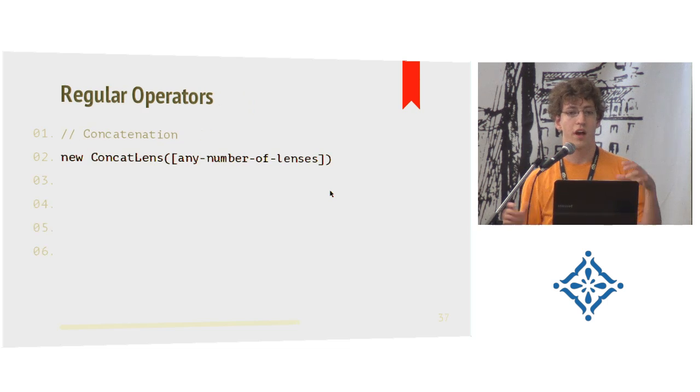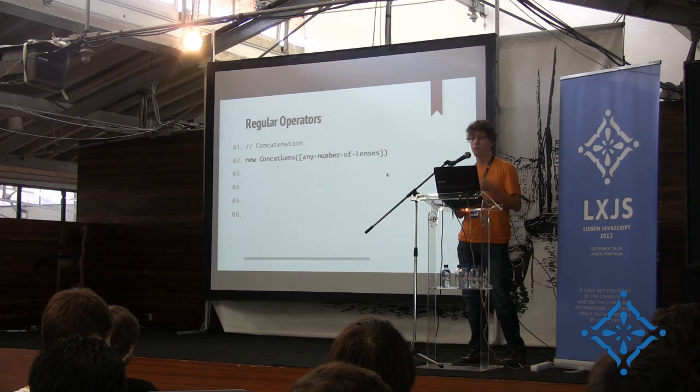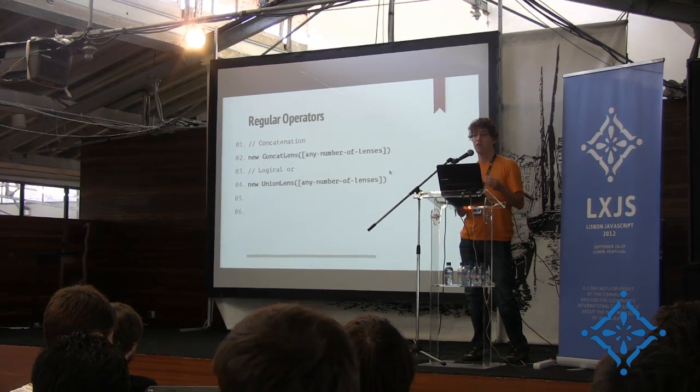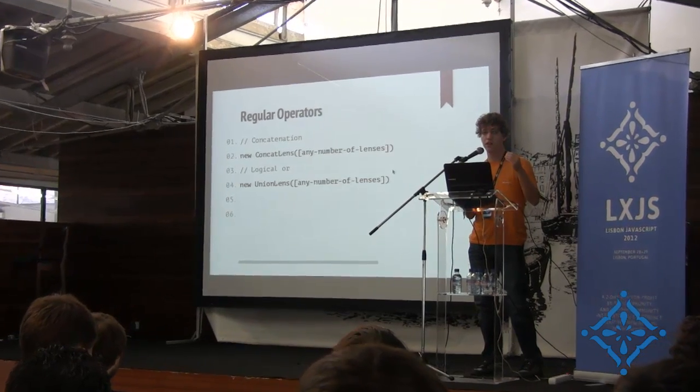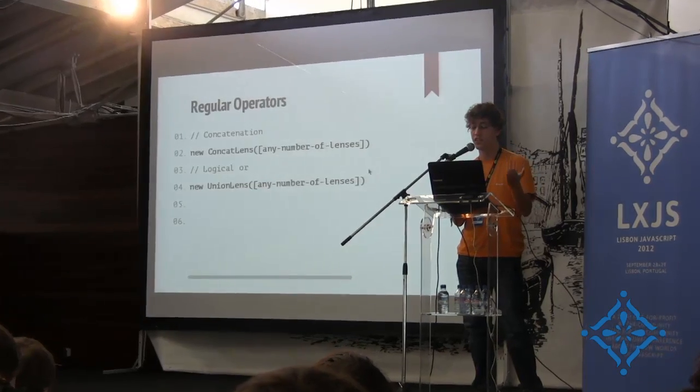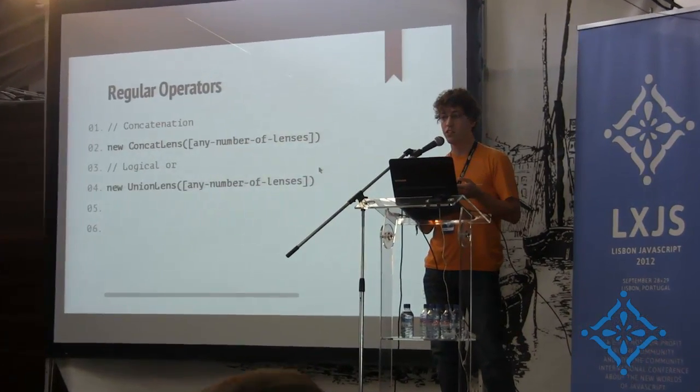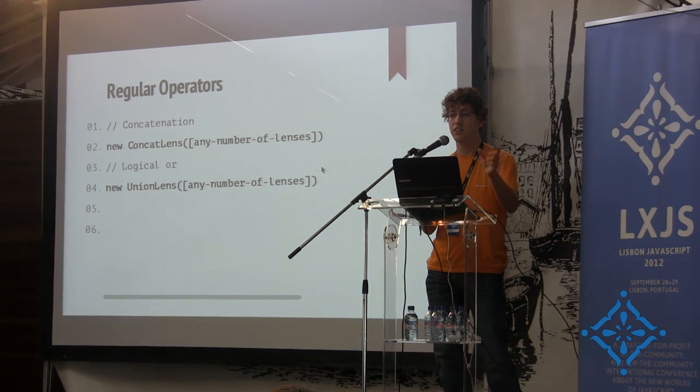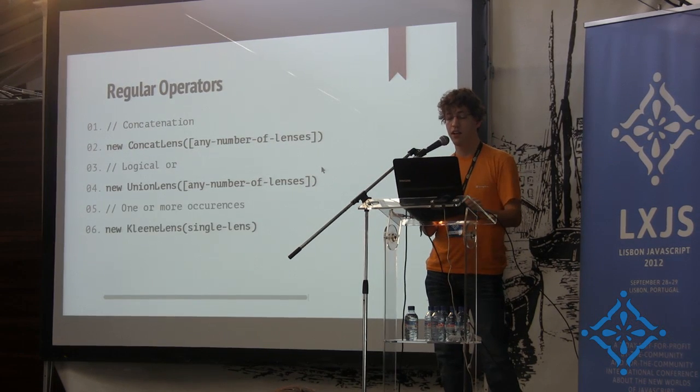And finally, you need somehow to combine all this. You need to combine those del and ins lenses, for example. You can concat them - we have several of those applied. Then you have something called a union lens, which is basically just an or. So you can say either apply this lens or apply that lens. And finally, the kleene, which is just one or more appearances.